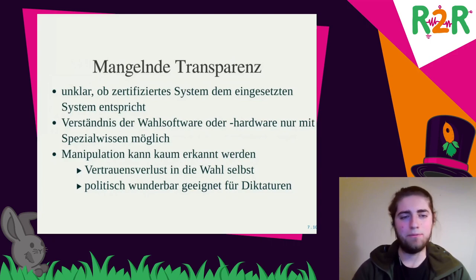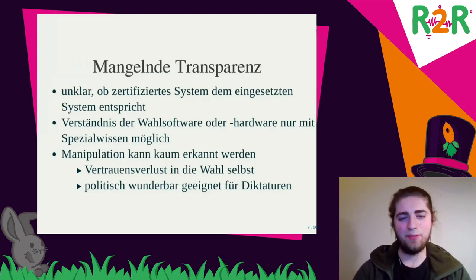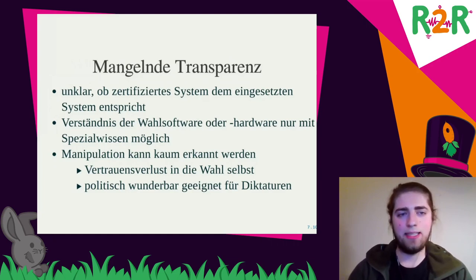If a manipulation is hard to detect, if there might be a manipulation possible, then there is a loss of trust in the election itself — and that's an important political argument. It's very easy to use online elections for corrupt systems because they are so easy to manipulate. And this leads back to universities: I think universities can open doors to society, and it's very critical if universities do something that can be preferred by autocratic regimes.